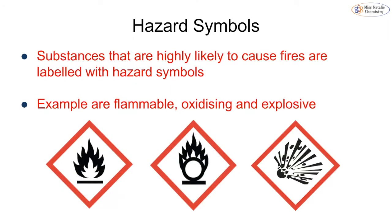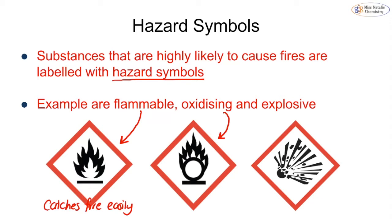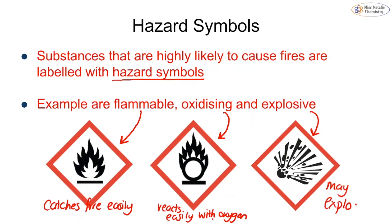Any substance very likely to cause fires is labeled with hazard symbols, which we covered back in year seven. There are three you need to know: the flammable symbol means it catches fire easily; the oxidizing symbol means it reacts easily with oxygen; and the explosive symbol means it may explode. If you see any of these on a substance, never have an open flame near them as they are hazardous.